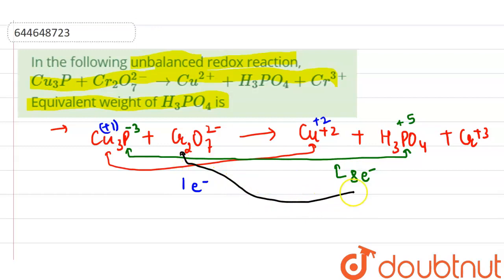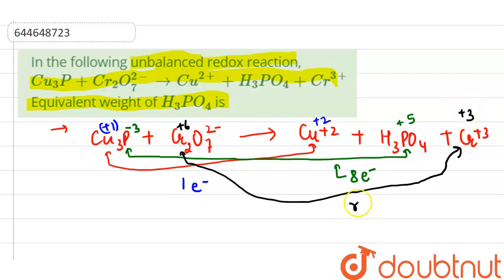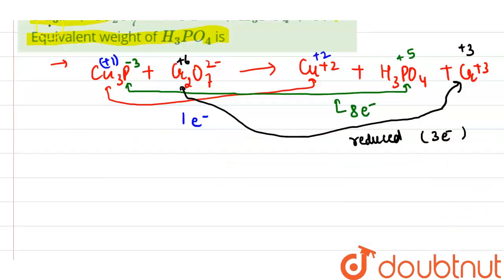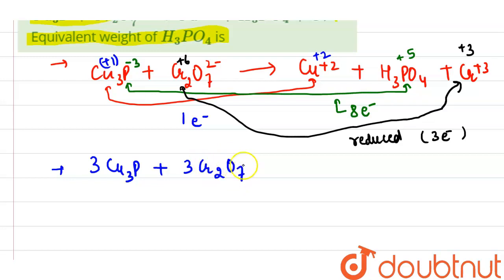Chromium, Cr₂, is getting reduced from plus six oxidation state to plus three oxidation state. So the change in electrons for chromium is three electrons.